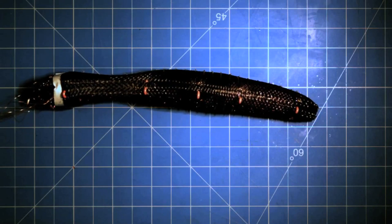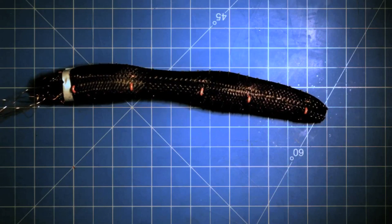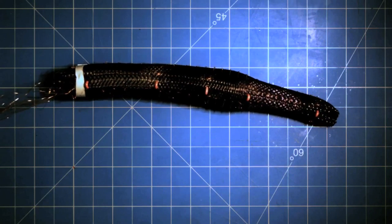The robot, made almost entirely of soft materials, is named meshworm for the flexible, mesh-like tube that makes up its body.